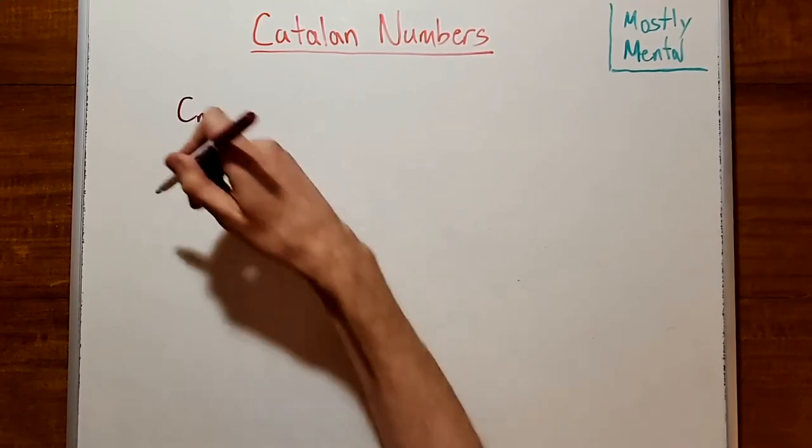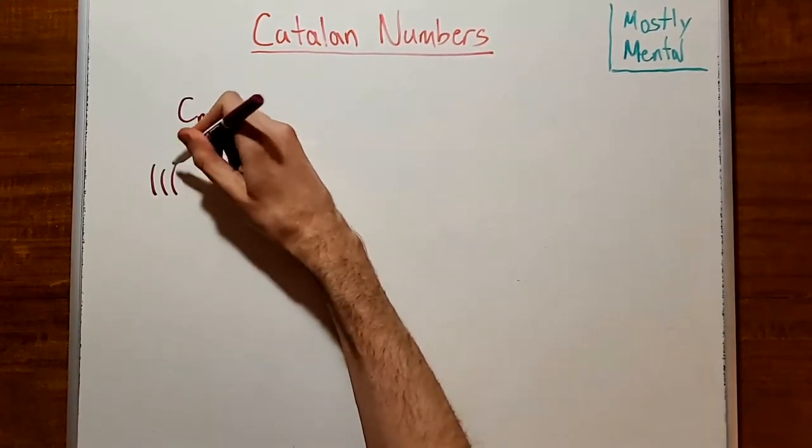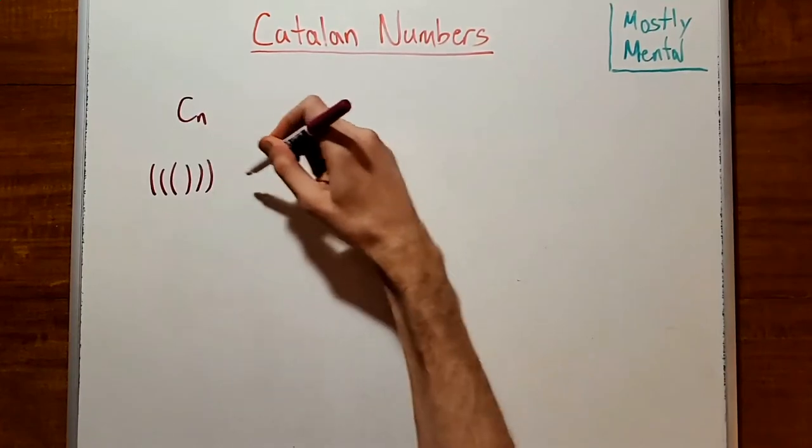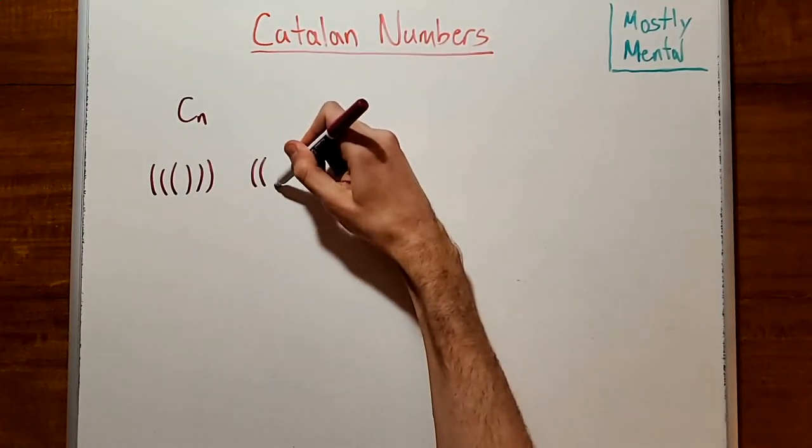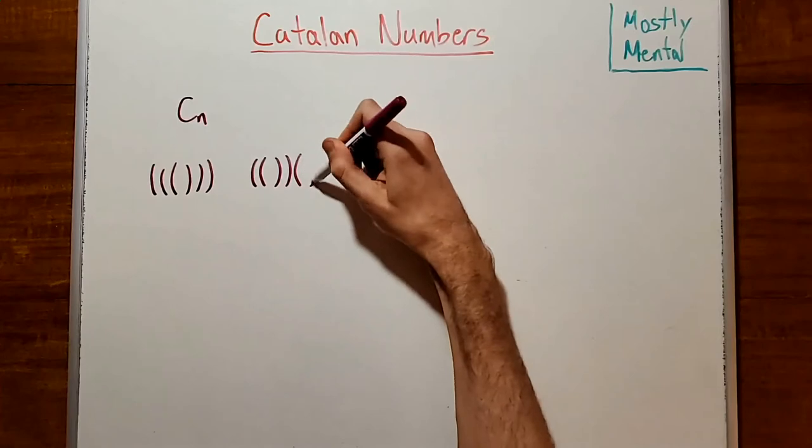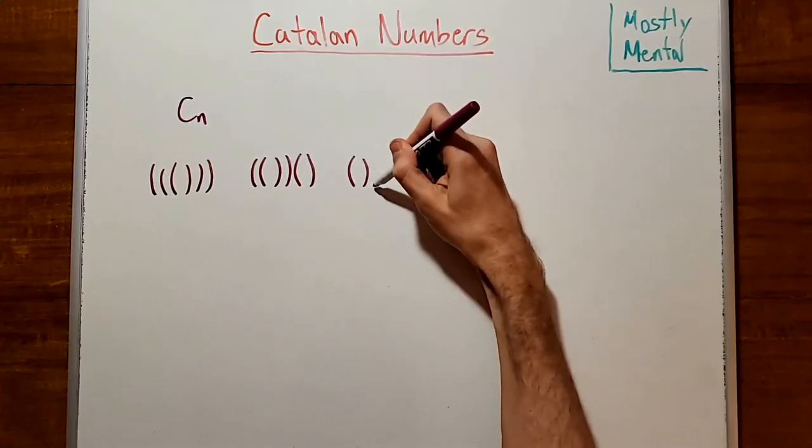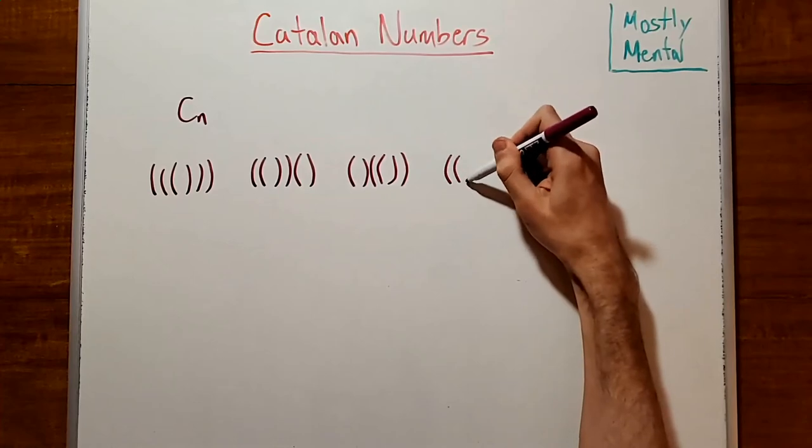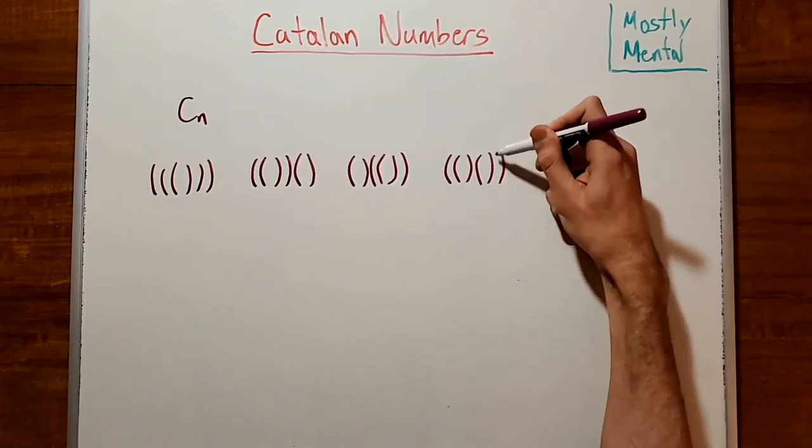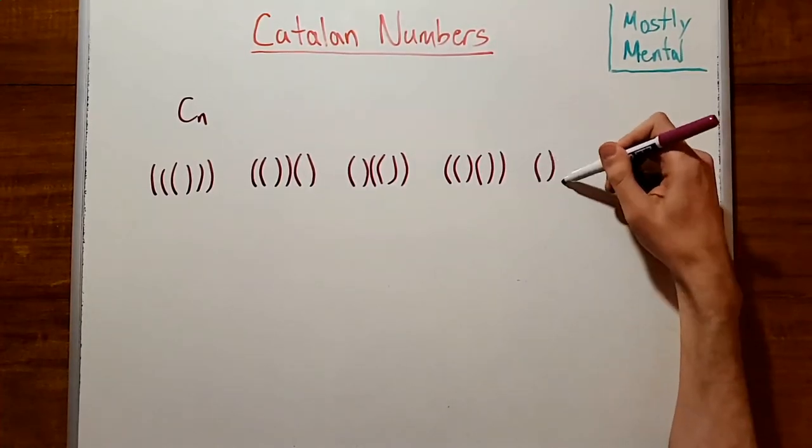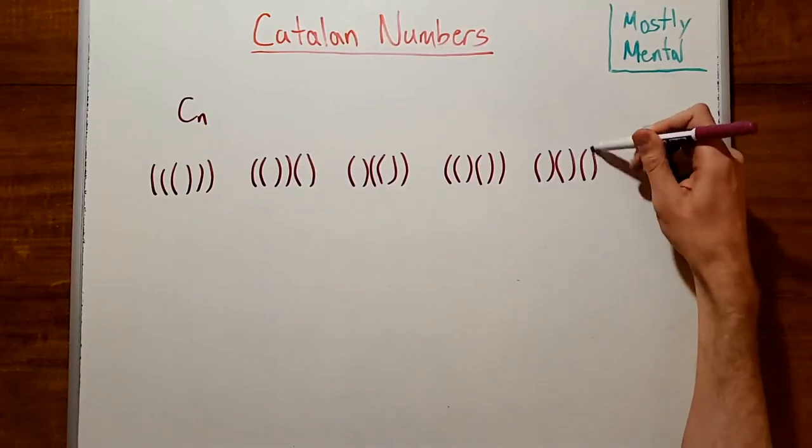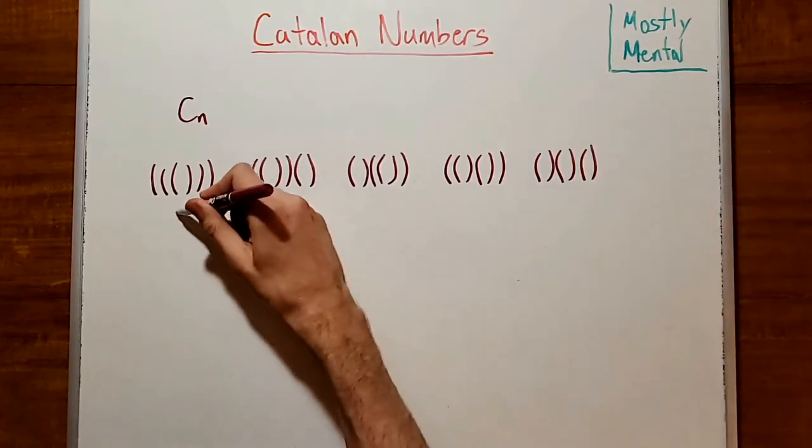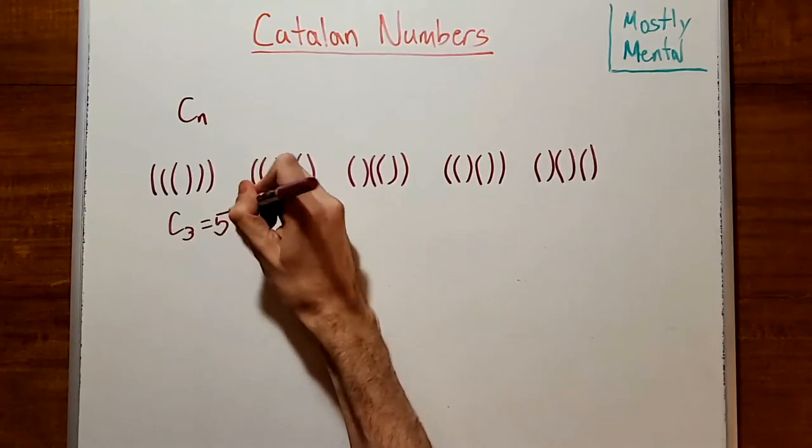So for example, if we have three open paren and three close paren, then we can make five sequences like so. And so we say that C sub 3 is 5.